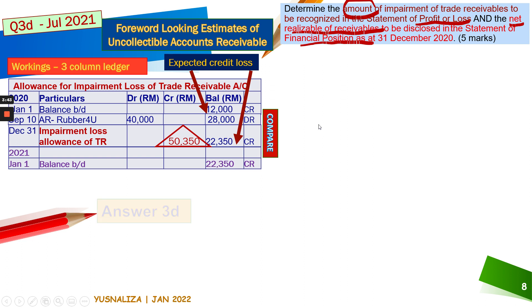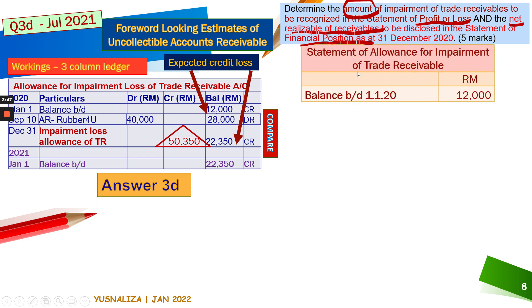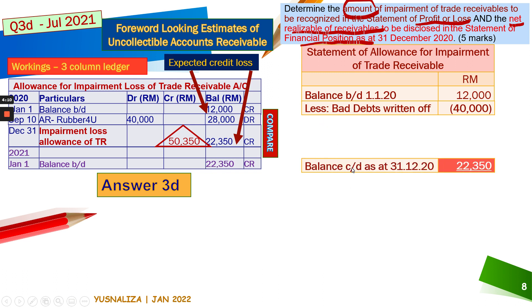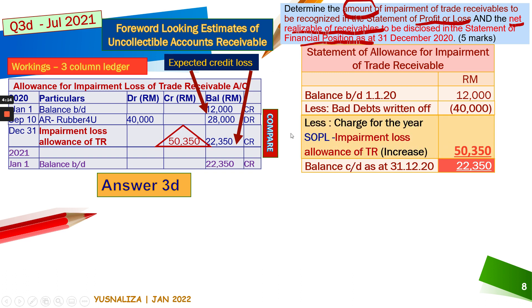After that, you can write your answer by preparing the statement of allowance for impairment loss of trade receivable. Start by putting the beginning balance from your allowance for impairment ledger, then put the bad debt written off of 40,000, and the closing balance of 22,350 as the last row. The charge for the year — the increase in allowance — is 5,350, since the balance moved from 28,000 debit to 22,350.